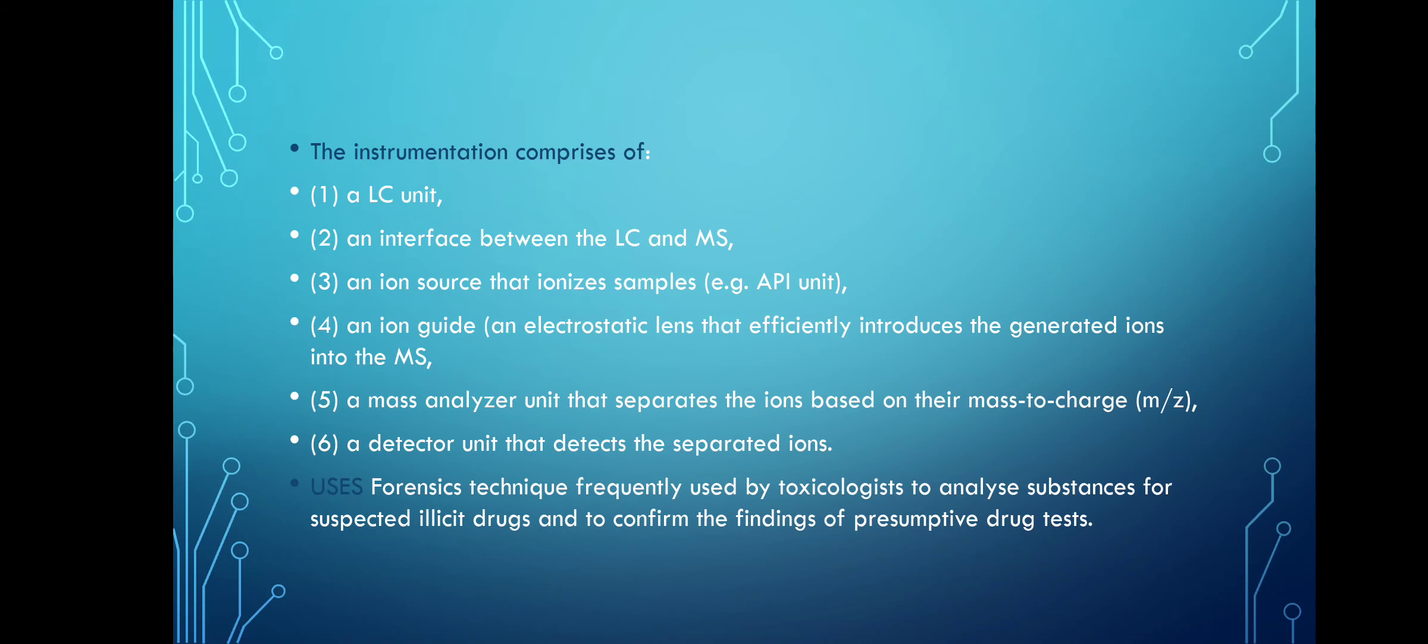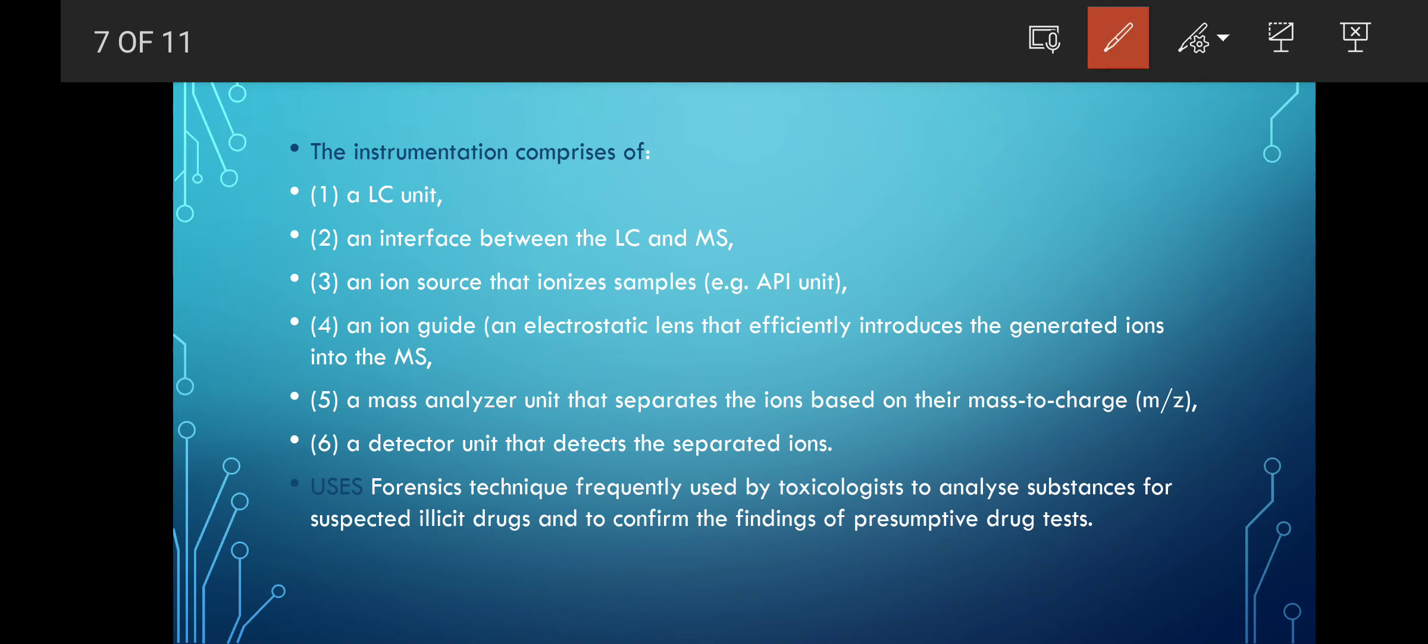The instrumentation comprises the LC unit, the interface between LC and MS, the ion source that ionizes the sample like the API unit, the ion guide, an electrostatic lens that introduces the generated ions into the MS. A mass analyzer separates the ions based on mass to charge ratio, and the detector detects the separated ions.